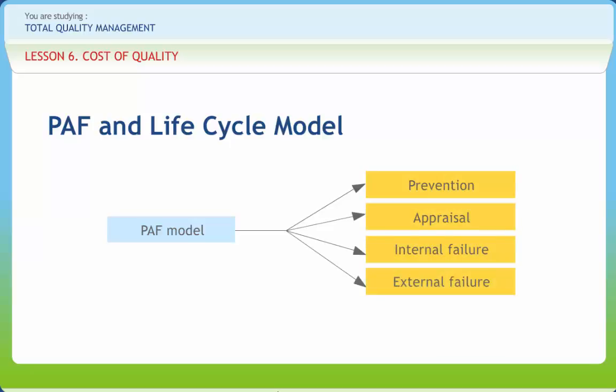The prevention costs of poor quality have been defined to include the cost of all activities specifically designed for this purpose. Corrective action that is directed towards elimination of the problem in the future may be classified as prevention.